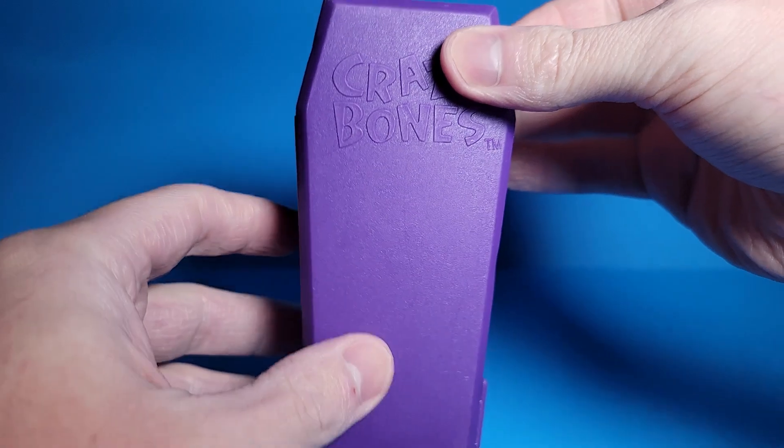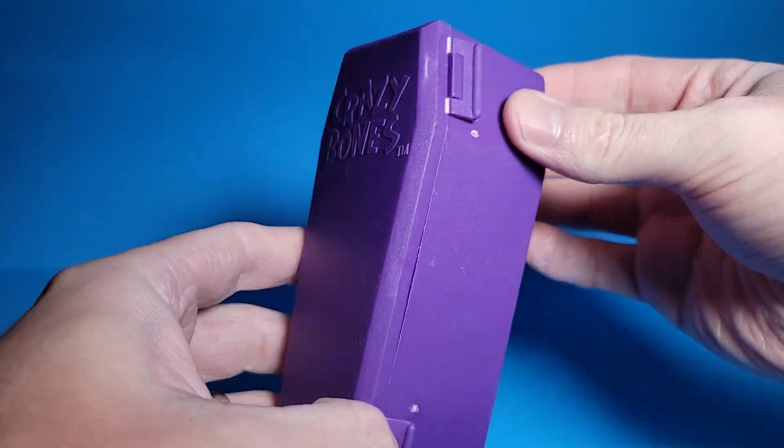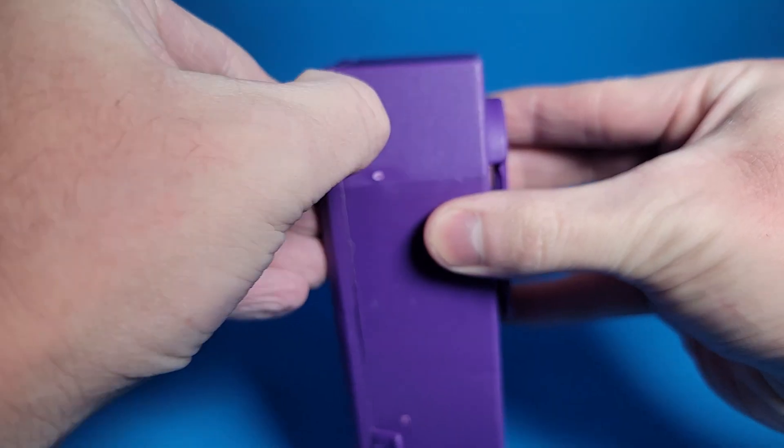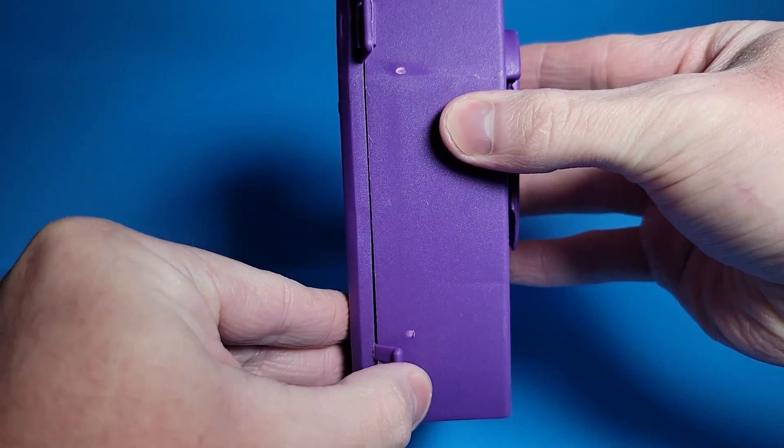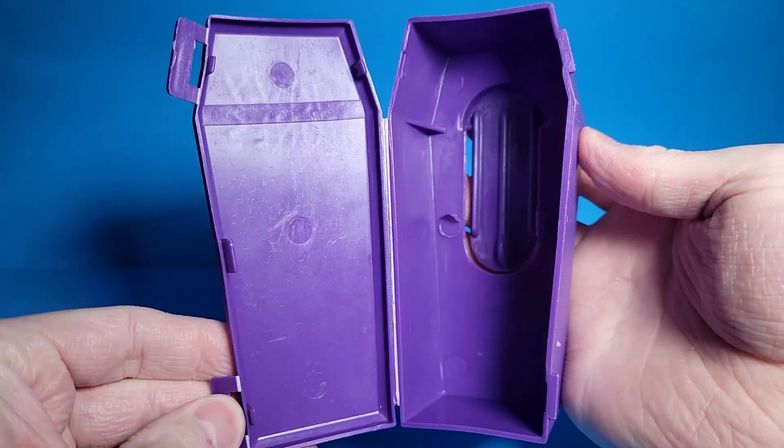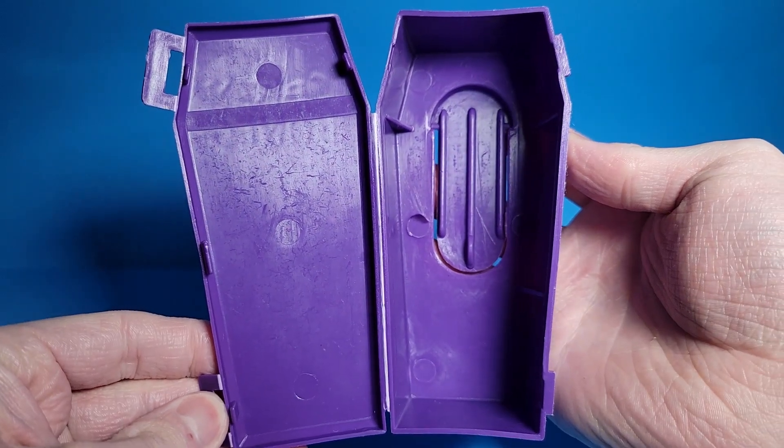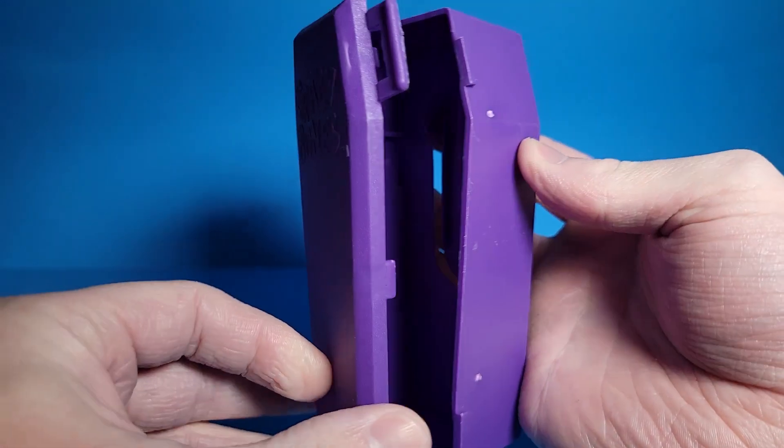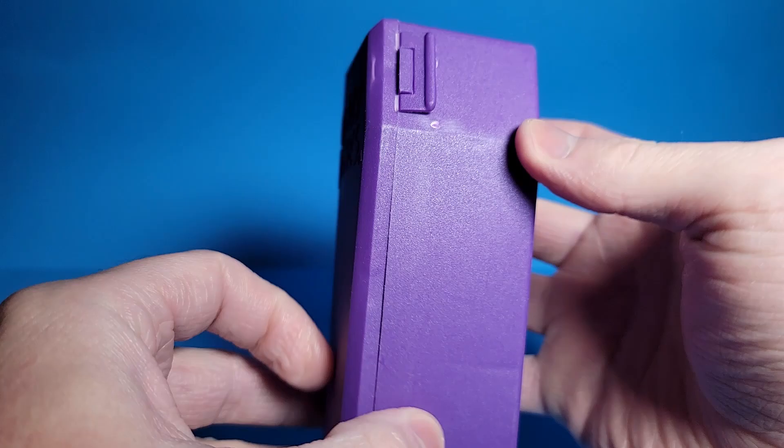My Crazy Bones lunchbox I showed in the Dragon Ball Z Crazy Bones video is full so I ended up buying some of these coffin carry cases to store the Toy Story set. They're made of thin lightweight plastic. They seem cheaply made but sturdy. There are two latches on the front that keep the lid closed.